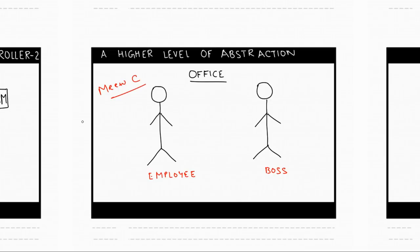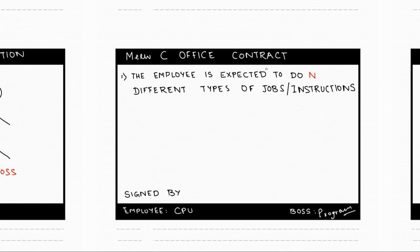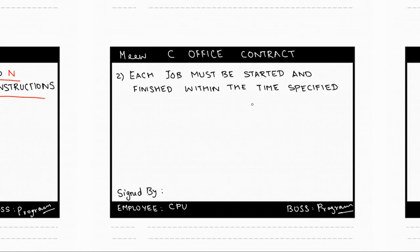This employee has been given this job on the basis of a contract. The first contract term reads: the employee is expected to do N different types of jobs or instructions. So in this MUC office there are N different types of jobs or instructions that can be given by the boss and the employee is expected to do all of them. The second term reads that each job must be started and finished within the time specified.